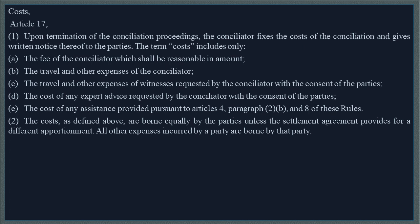Costs — Article 17. Upon termination of the conciliation proceedings, the conciliator fixes the costs of the conciliation and gives written notice thereof to the parties. The term costs includes only: the fee of the conciliator, which shall be reasonable in amount; the travel and other expenses of the conciliator; the travel and other expenses of witnesses requested by the conciliator with the consent of the parties; the cost of any expert advice requested by the conciliator with the consent of the parties; and the cost of any assistance provided pursuant to Articles 4, paragraph 2(b), and 8 of these rules. The costs are borne equally by the parties unless the settlement agreement provides for a different apportionment. All other expenses incurred by a party are borne by that party.